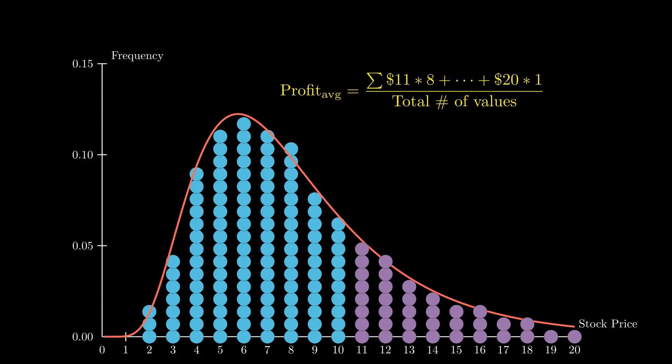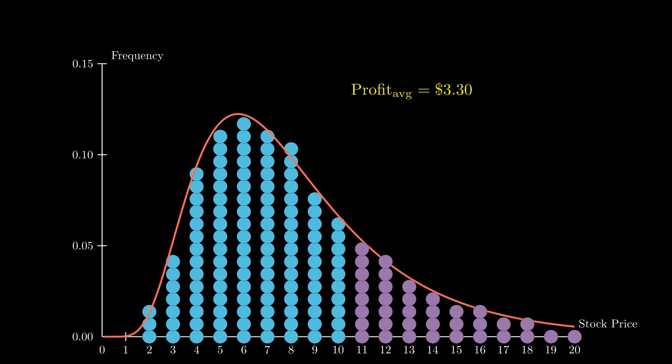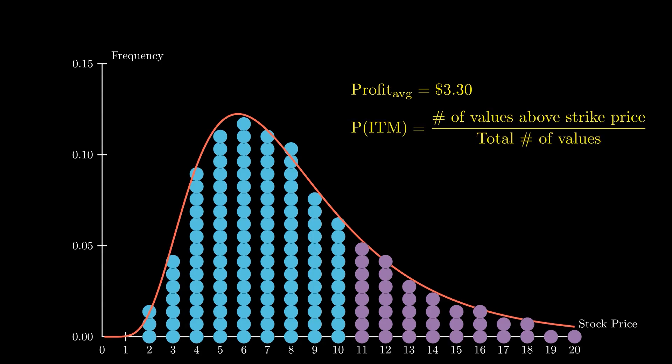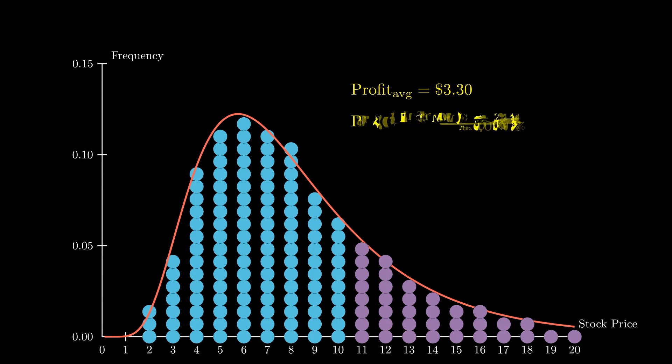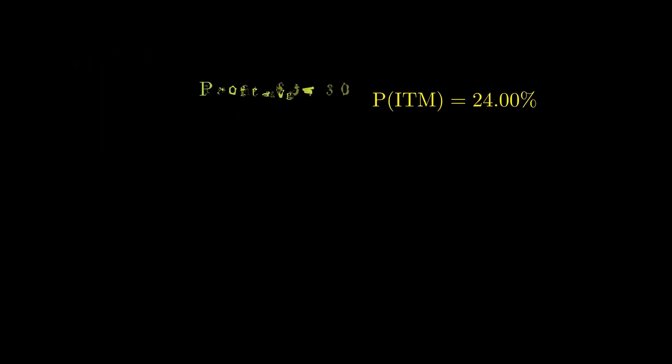We do the same with $12, multiplying by 7, and so on until $20. Then we find the average value of all stock above the strike by dividing this number by the total number of all occurrences in the distribution. Next, we determine the likelihood of paying the strike price by dividing the number of occurrences above the strike price by the total number of occurrences in the distribution. The expected cost from exercising this option is this likelihood multiplied by the strike price.